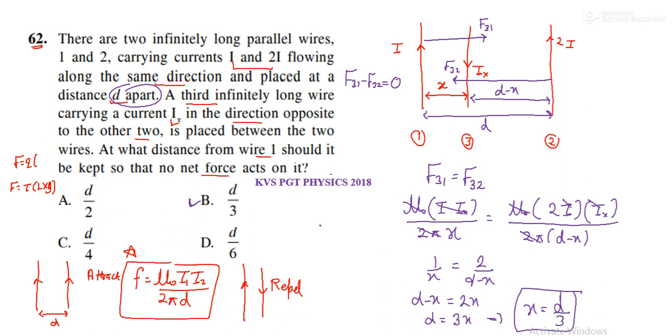Option B. So this is the concept we applied. The two forces act in opposite directions, so the net force is zero. From there we found the x distance. The x that we got is the distance from the first wire where the third wire should be placed.